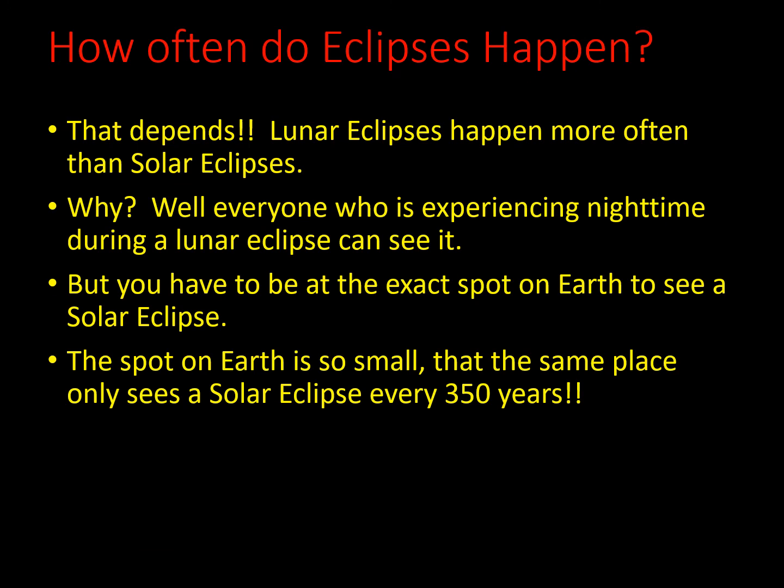How often do eclipses happen? Lunar eclipses happen more often than solar eclipses. Everyone experiencing nighttime during a lunar eclipse can see it, but you have to be at the exact spot on earth to see a solar eclipse. That spot is so small that the same place only sees a solar eclipse every 350 years.